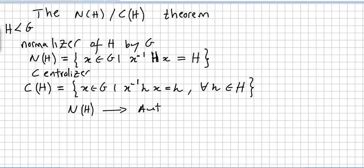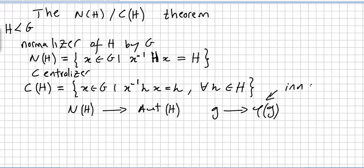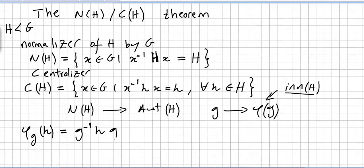We consider a mapping from the normalizer of H to the automorphism group of H, given by G mapping to phi of G, where phi of G is the inner automorphism of H induced by G.